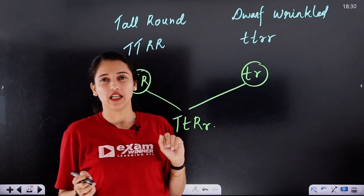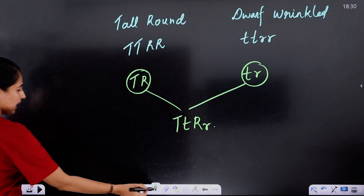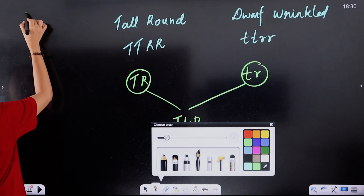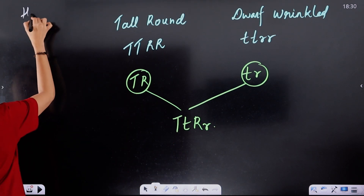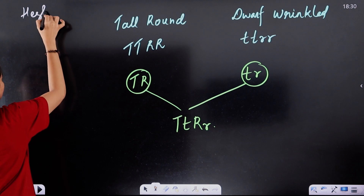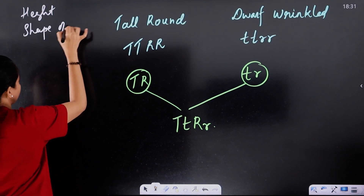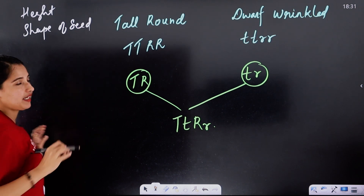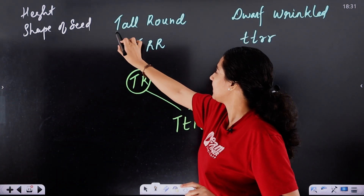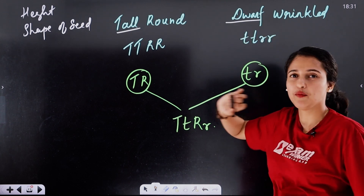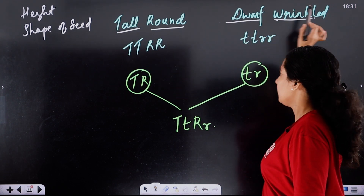We consider dihybrid — two characters are considered. The two characters are: first, length or height of plant; and second, shape of seed. For height, we have tall versus dwarf, and for shape of seed, we have round versus wrinkled.